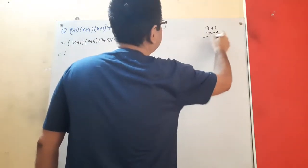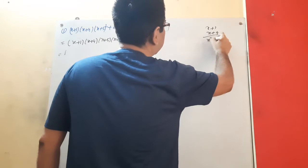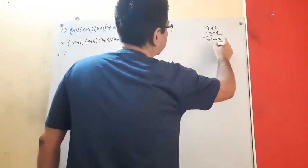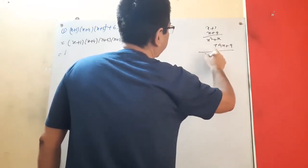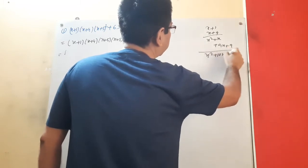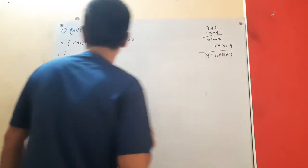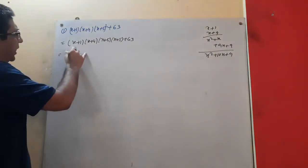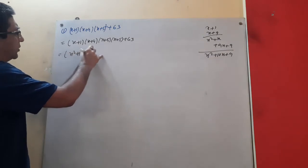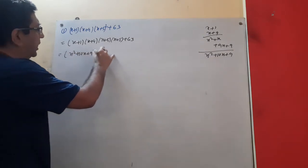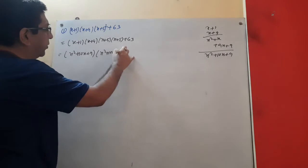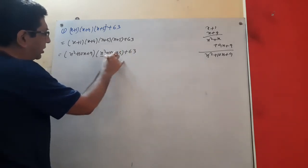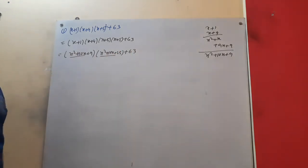Multiplying x+1 and x+9 gives x² + x + 9x + 9, so we get x² + 10x + 9. And multiplying x+5 and x+5 gives x² + 10x + 25. Notice that the x² + 10x part is the same in both products.